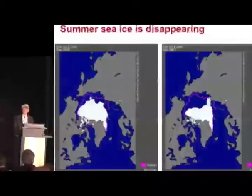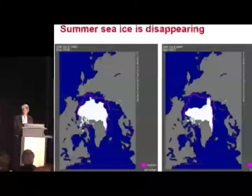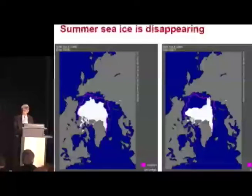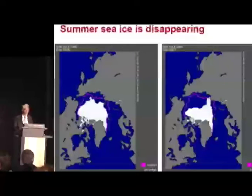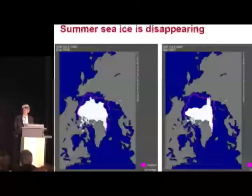Summer sea ice is disappearing. These are the latest images from the National Oceanic and Atmospheric Administration in the United States. The pink line shows the long-term recent average sea ice extent. The left panel is 2005, which set a record for reduction in summer sea ice in the Arctic.